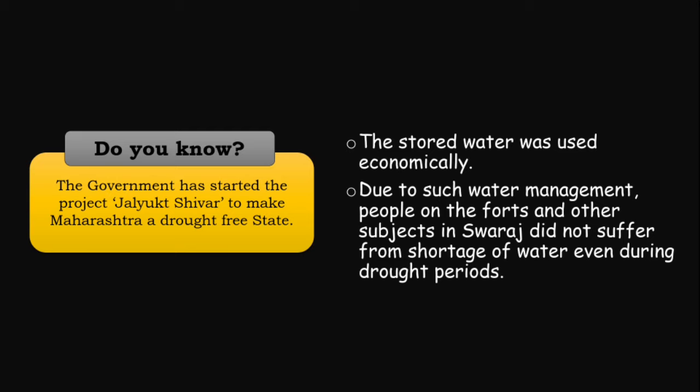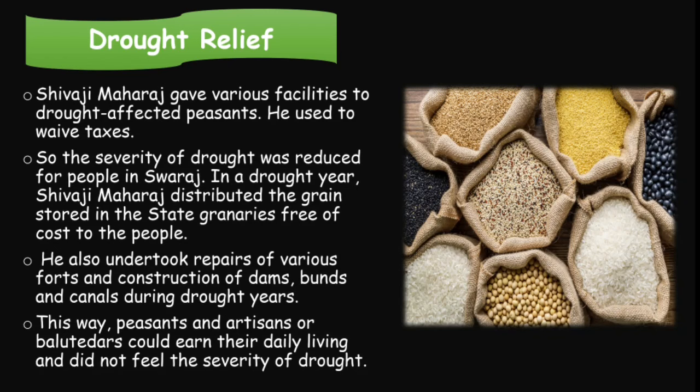The stored water was used economically. Due to such water management, people on the forts and other subjects in Swaraj did not suffer from shortage of water even during drought periods. Drought relief: Shivaji Maharaj gave various facilities to drought-affected people. He waived taxes so the severity of drought was reduced for people in Swaraj. In a drought year, Shivaji Maharaj distributed grains stored in the state free of cost to the people. He also undertook repair of various forts and construction of dams.